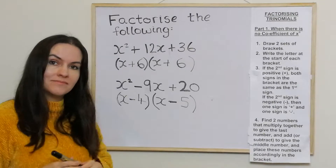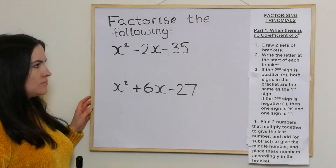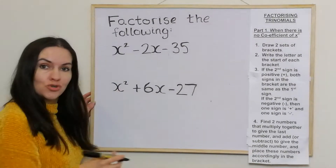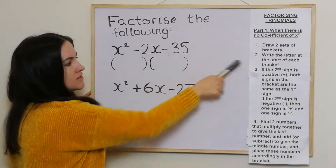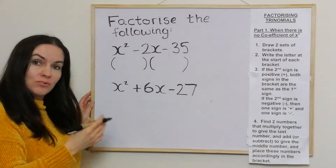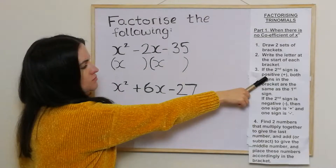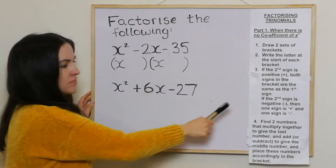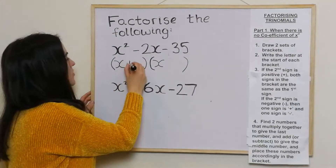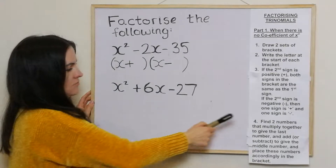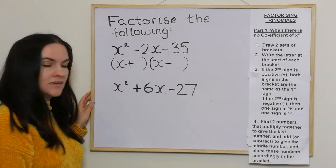Now we have two more examples. Again, there's no coefficient of x squared, so we draw two sets of brackets and write x at the start of each bracket. The second sign is negative, which means one sign is positive and one sign is negative. In step four, we're looking to find two numbers that multiply together to give the last number and add or subtract to give the middle number.